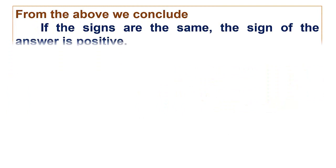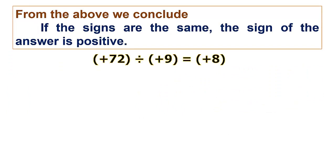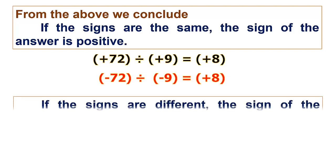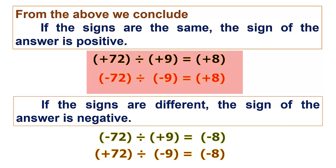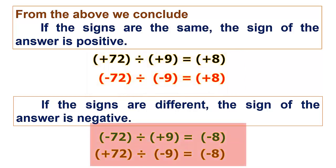From the above, we conclude: if the signs are the same, the sign of the answer is positive. If the signs are different, then the sign of the answer is negative. For example, minus 72 divided by plus 9 gives us minus 8. Plus 72 divided by minus 9 gives us minus 8. And now let us check this in the multiplication table.